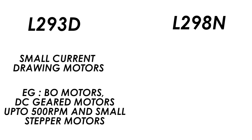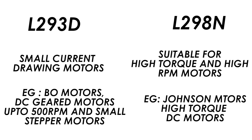The L298N has the advantage of higher output current — up to 2 amperes — and therefore it is suitable for high-torque and high-RPM motors like Johnson motors and high-torque DC geared motors. So those were the differences between these two motor drivers.